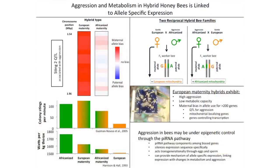By hybridizing European bees and Africanized bees together, we can actually get at the genetics underlying that behavior. The interesting aspect of this hybridization is that hybrids with an Africanized mother are highly aggressive, while hybrids with a European mother are less aggressive — sort of in between the two parent types. We wanted to know what's happening on a gene regulatory level in terms of what's affecting that aggression.